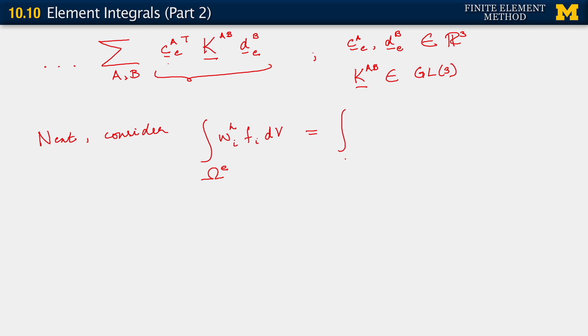So we have integral over omega_e, sum over A, N_A with no gradient on it, C_A^ie. That sum gives us our weighting function components. This times f_i, or just actually multiplying f_i, and there's a sum implied over the i, dV.